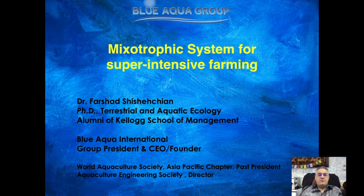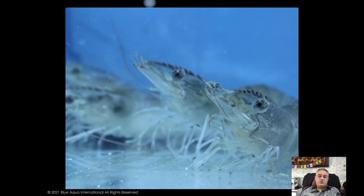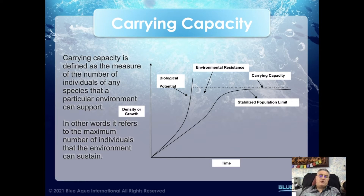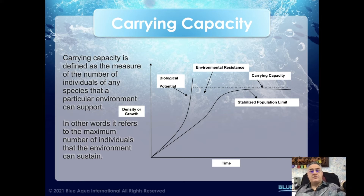Good afternoon or good morning, I'm Farshad and I will be talking about the mixotrophic system for super intensive shrimp farming. As a farmer, we always try to increase the carrying capacity of whatever operation we have. There is a potential to increase carrying capacity, but there is always environmental resistance that stops this, and we have to look at factors that can help us improve and increase it.